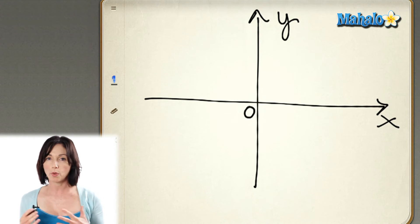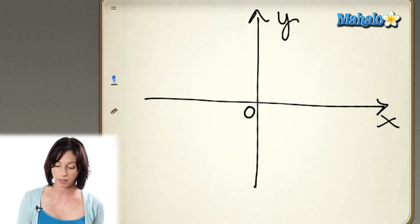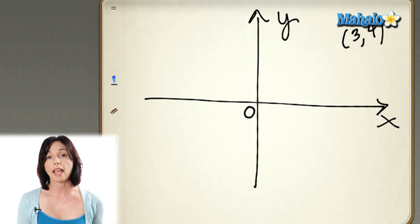Now, when you see a pair of coordinate points, something like 3, 4, the first value is the x-coordinate, and the second value is the y-coordinate.